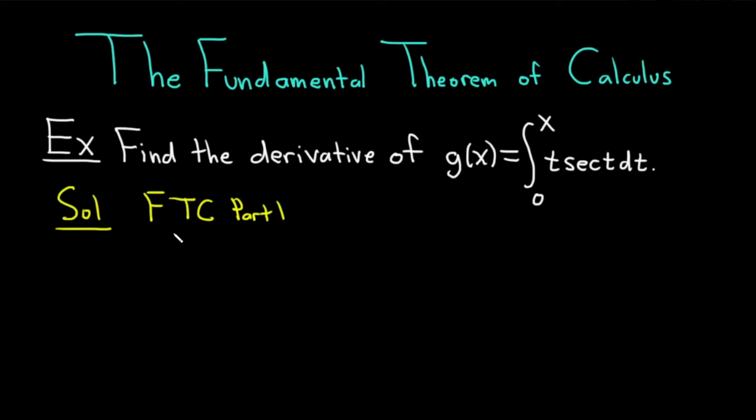Some people call this Part 1 of the Fundamental Theorem. It basically says if you take the derivative with respect to x of the definite integral from a to x of f(t) dt, you're just going to get f(x). And this is true as long as f is continuous.